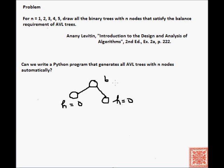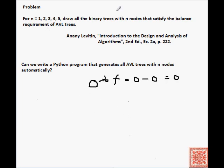The balance factor of a node — of the root node, of any node — is the difference between the heights of the left subtree and the right subtree. In this case, it's zero minus zero equals zero.